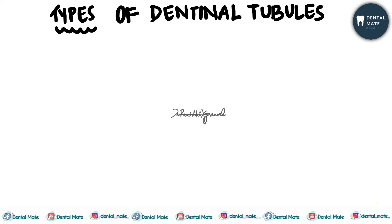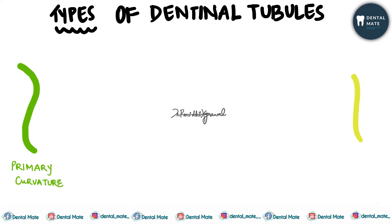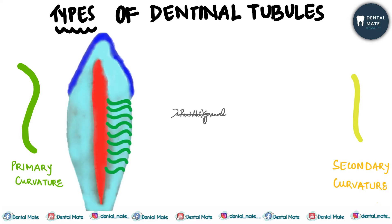Now if we talk about the types of dentinal tubules, there are two types: primary curvature and secondary curvature. The primary curvature type of the dentinal tubule is basically S-shaped, and the secondary curvature has small undulations and a sinusoidal course. The primary curvature is S-shaped completely, and the secondary curvature is sinusoidal.